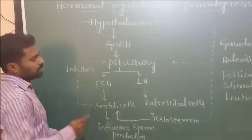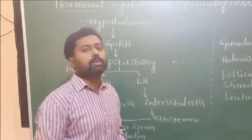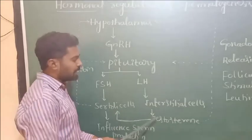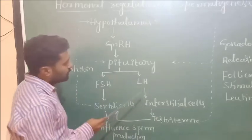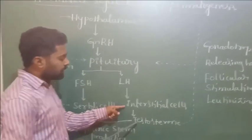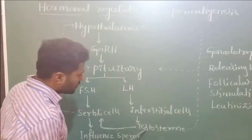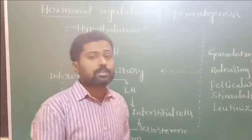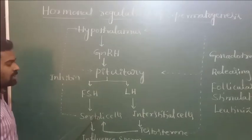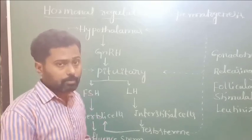On the other hand, LH, that is luteinizing hormone, stimulates the interstitial cells or Leydig cells found in the testicles. The Leydig cells secrete testosterone, a major androgen found in males. Under the stimulus of LH, the Leydig cells secrete testosterone, which is very much necessary for the production of sperms. Testosterone also stimulates the Sertoli cells, helping in the maturation and further development of the sperm.